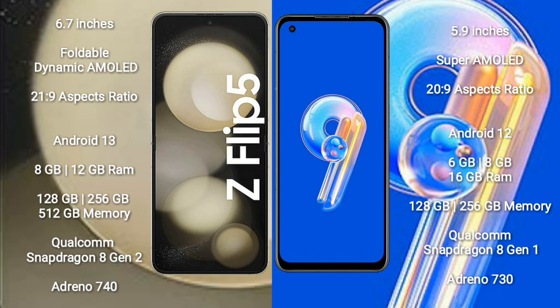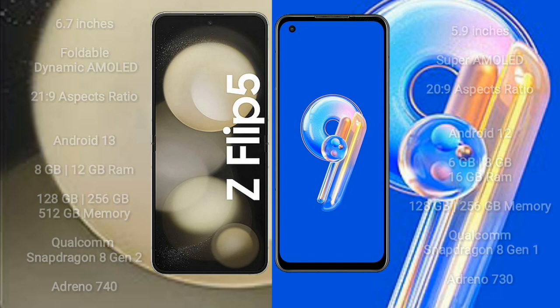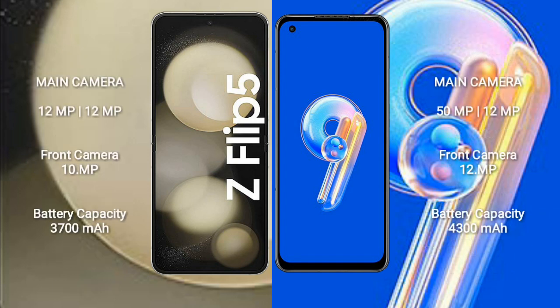Samsung Galaxy Z Flip 5 uses the Qualcomm Snapdragon 8 Gen 2 processor and Adreno 740 GPU. Asus Zenfone 9 comes with 6GB, 8GB, and 16GB RAM and 128GB, 256GB, and 512GB internal storage, with a Qualcomm Snapdragon 8 Gen 1 processor and Adreno 730 GPU. Samsung Galaxy Z Flip 5 has a rear dual camera setup.